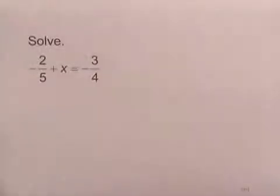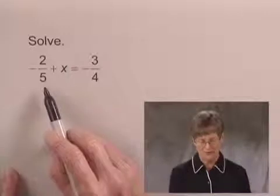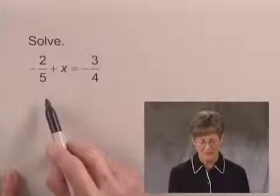We'll solve the equation negative two-fifths plus x equals negative three-fourths. By looking at the left-hand side of the equation, I see that if I would add two-fifths, I would have x alone on that side of the equation.